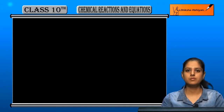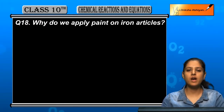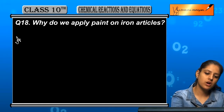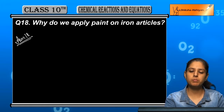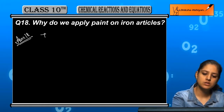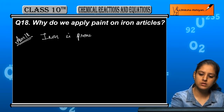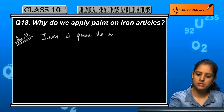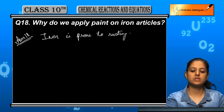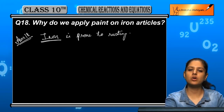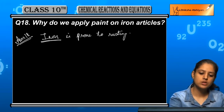Question number 18: Why do we apply paint on iron articles? Iron is prone to rusting — the deterioration of the surface of iron.